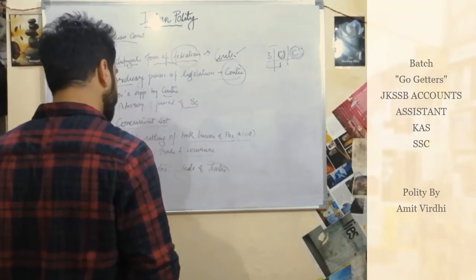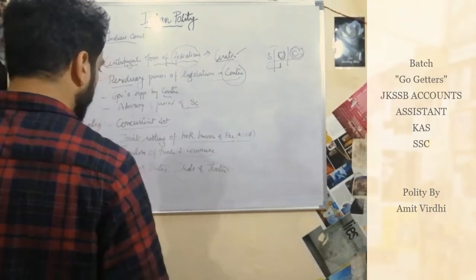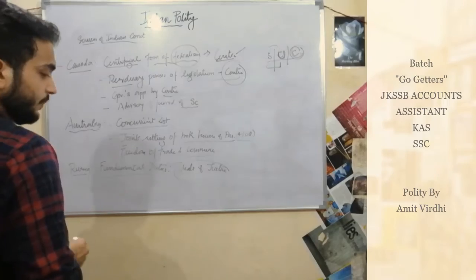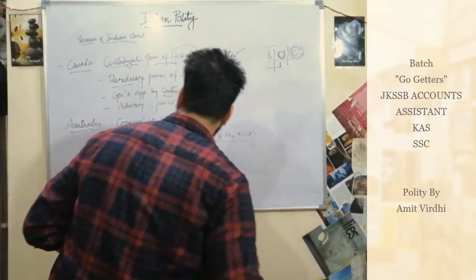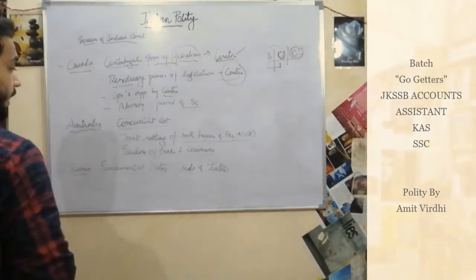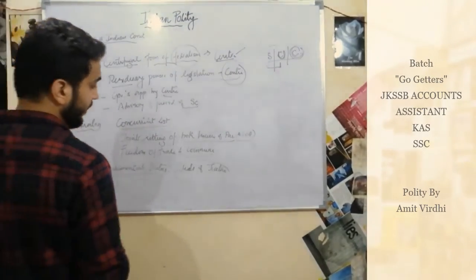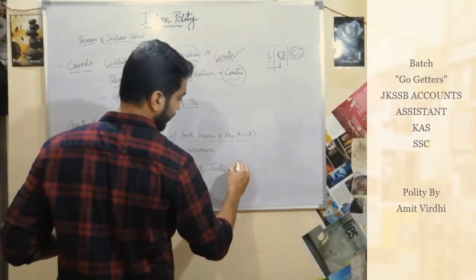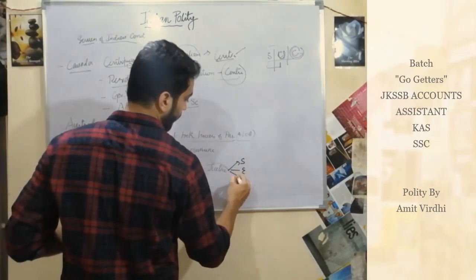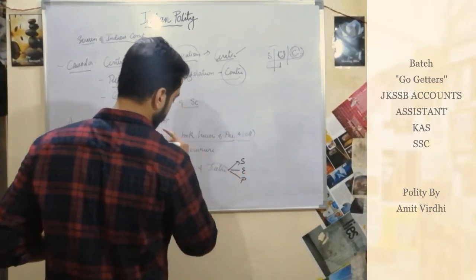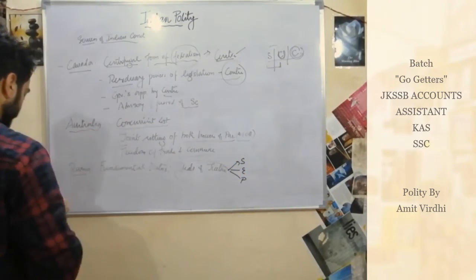The ideals of justice found in the Preamble — social justice, economic justice, and political justice — were inspired by Russia.